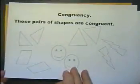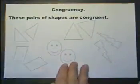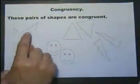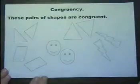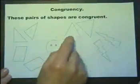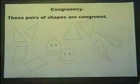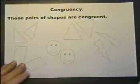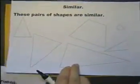Let's throw up the word congruency just to remind you: two shapes that are congruent are exactly the same in every respect — same length of sides and same angles. Congruent shapes are exactly the same, whereas similar shapes have the same angles.